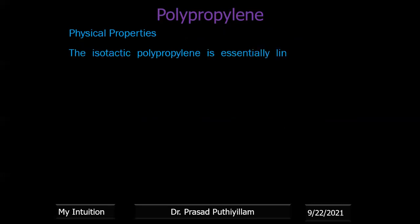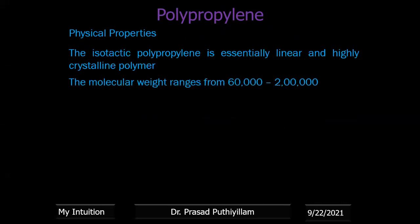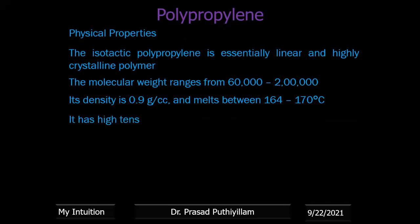Isotactic polypropylene is essentially a linear and highly crystalline polymer. Molecular weight ranges from 60,000 to 200,000. Density is 0.9 g/cc. Melting point is 164–170°C and it has high tensile strength, stiffness, and hardness. Tensile strength is the ability to withstand stretching — measured using a universal testing machine by applying a stress-to-strain ratio. It is the resistance to pulling in a lengthwise manner.